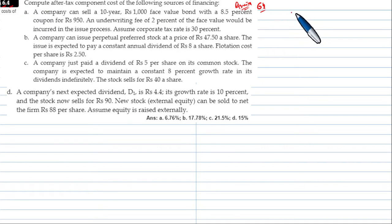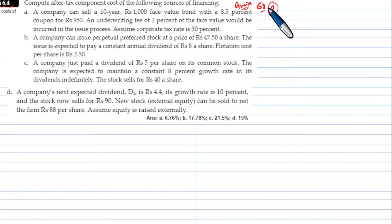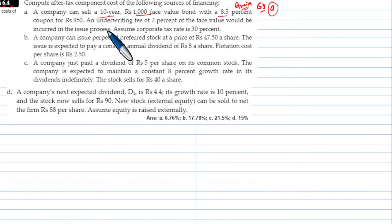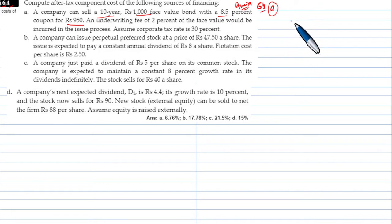Compute the after-tax component cost of the following sources of financing — this is the cost of capital. A company can sell a 10-year, 1,000 face value bond with an 8.5 percent coupon for rupees 950. An underwriting fee of 2 percent of face value would be incurred in the issue process.